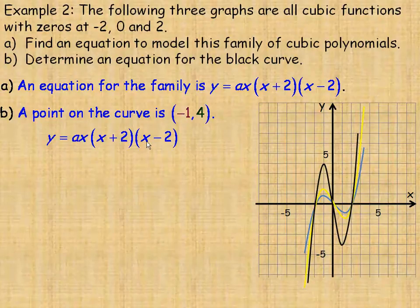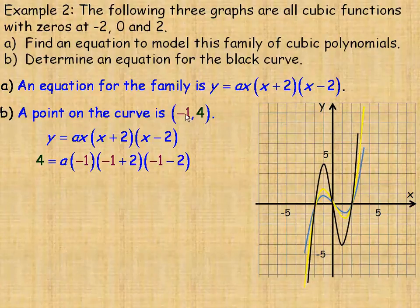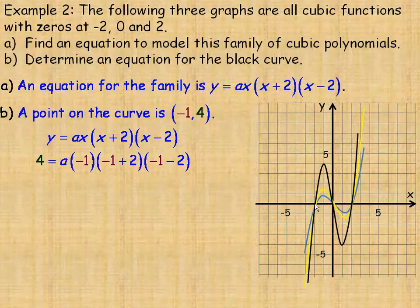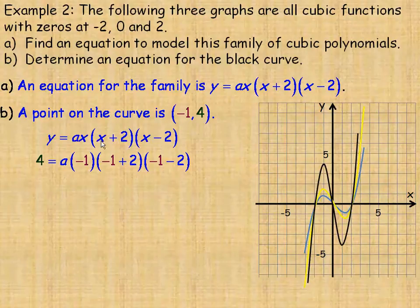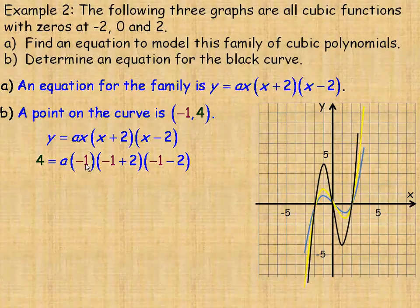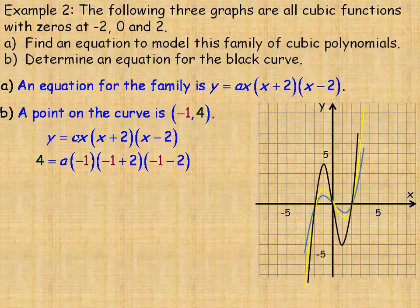Now, if instead of using the negative 1, 4 point, if I had used, for example, this point here, which is the point negative 2, 0. The negative 2 is the x coordinate. If I put negative 2 in here for x, and it really only matters about this particular factor, negative 2 plus 2 would be 0. Since that's 0, the entire right side would become 0 and we couldn't solve for a. That's why we wouldn't use one of the intercepts. Any one of the intercepts will make one of these factors 0, so then you can't solve for a. Choose a point that's not on the x-axis.